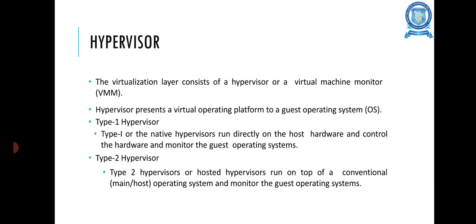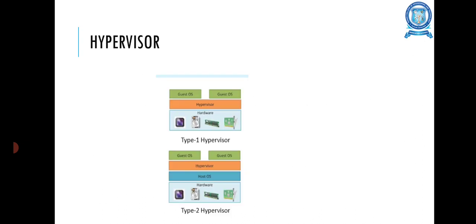A hypervisor presents a virtual operating platform to a guest operating system. In Type 1, the hypervisor is software that runs directly on the host hardware, controlling the hardware and monitoring the guest operating system. In Type 2, hypervisors are hosted hypervisors that run on top of a conventional operating system and monitor the guest operating system.